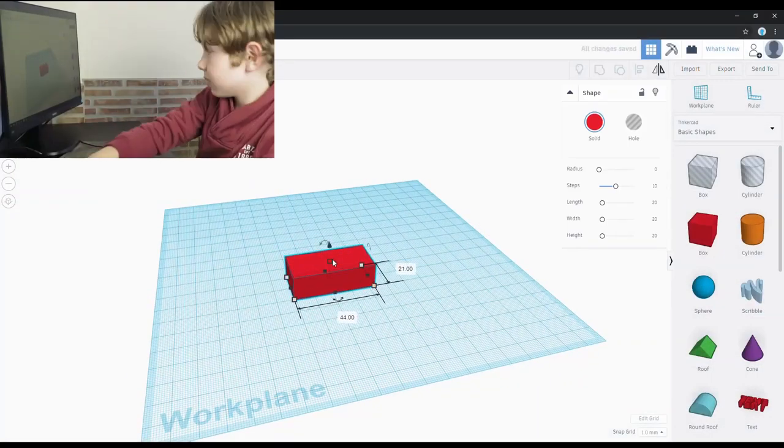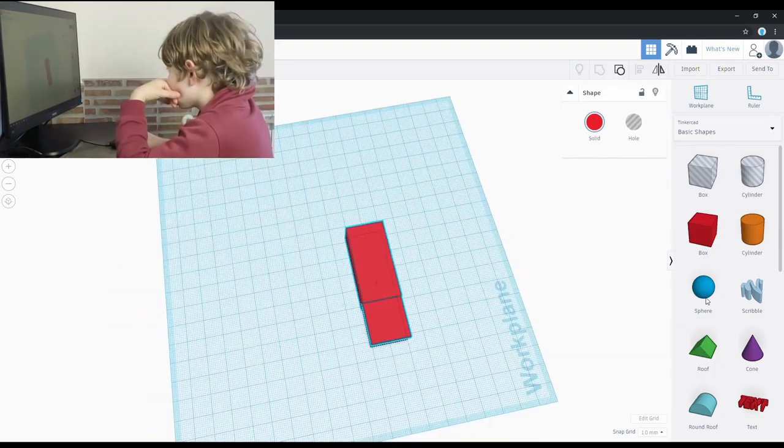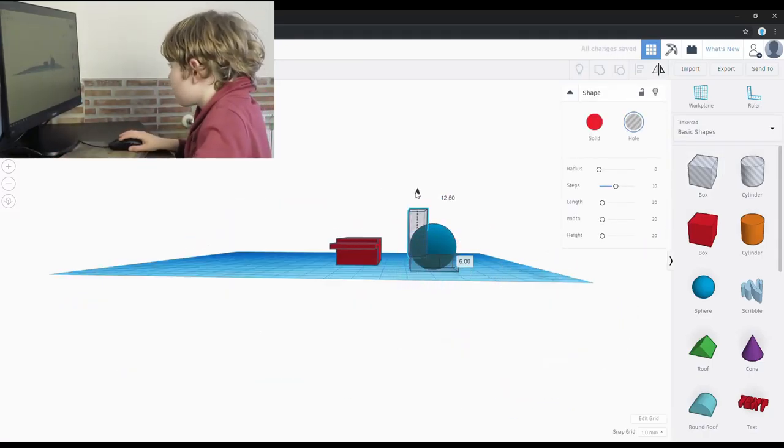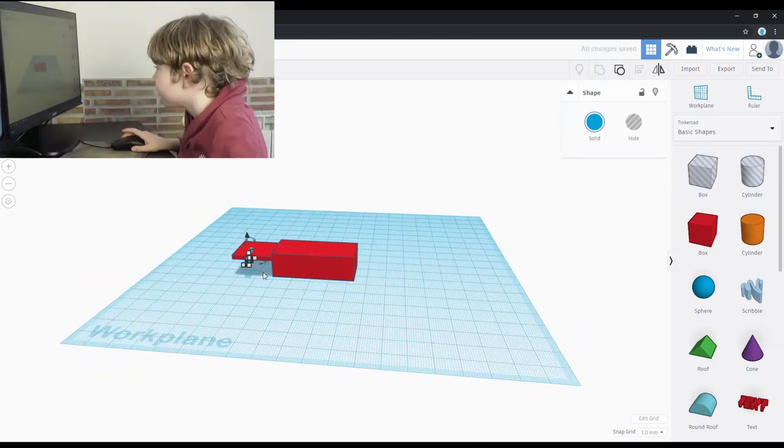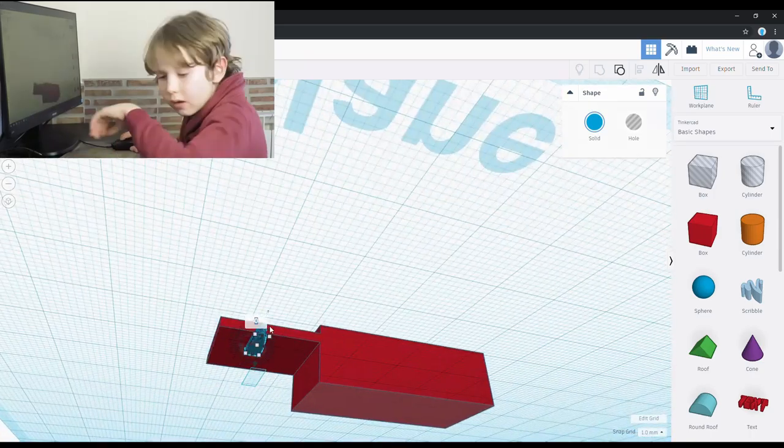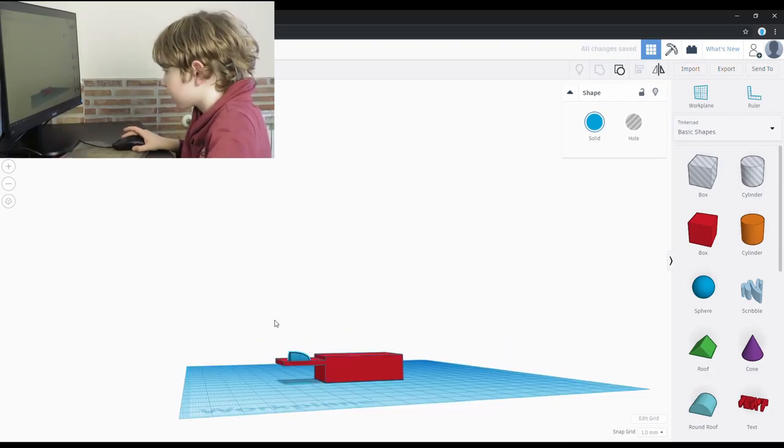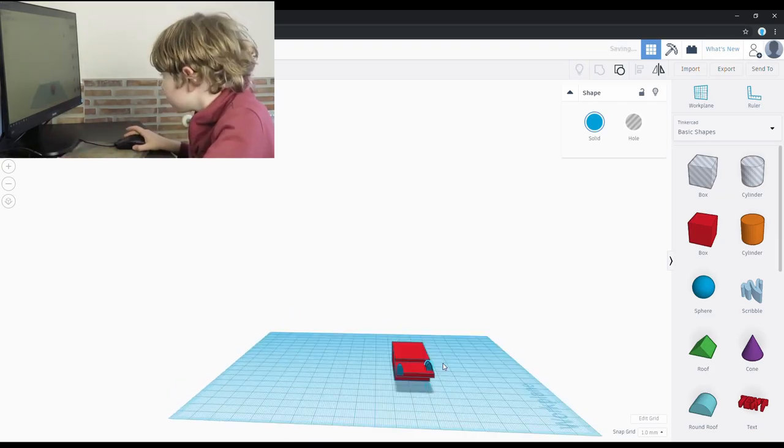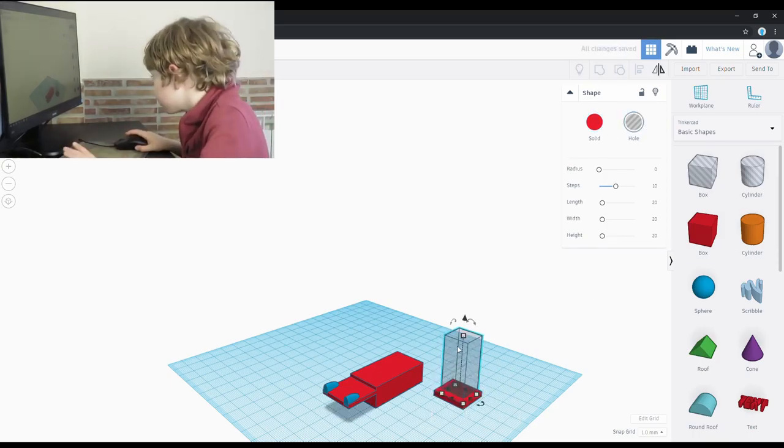I used two boxes to form the basic body of the jeep. Using a sliced sphere, I made two headlamps. To make the windscreen, I cut a hole out of a flattened box.